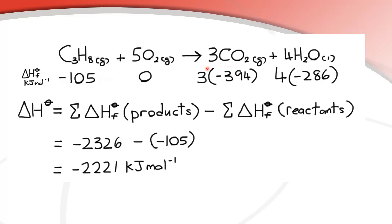Water is negative 286 kJ/mol. Because we have three moles of carbon dioxide, we multiply that value by three, and because we have four moles of water, we multiply that value by four. Using the equation — enthalpy change equals the sum of formation enthalpies of products minus reactants — we get negative 2326 minus negative 105, giving a total enthalpy change of negative 2221 kJ/mol.